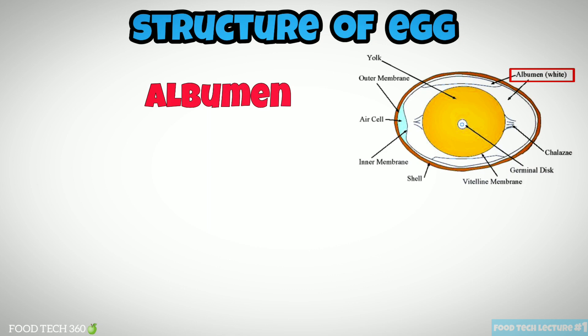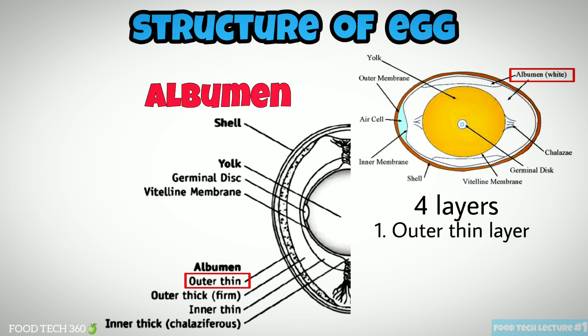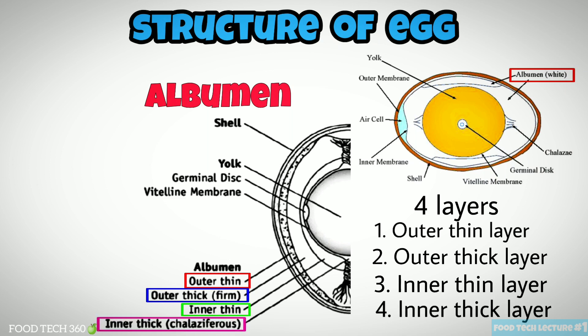Next, albumin. Egg albumin or egg white consists of four layers. The first is the outer thin layer, which is a narrow fluid layer next to the shell membrane. Then the outer thick layer, which is a viscous layer of white, also called the albuminous sac. Then the inner thin albumin. Then the inner thick albumin, which is a dense fibrous capsule of albumin around the vitelline membrane of the yolk.